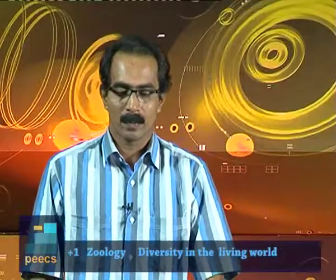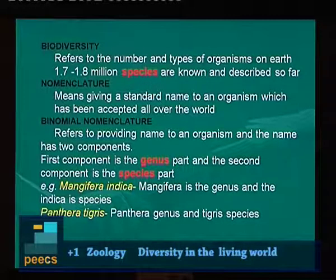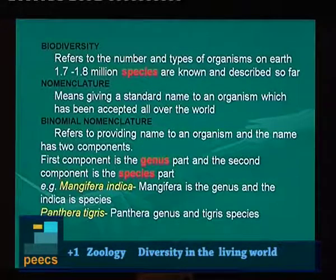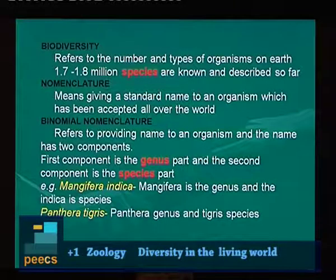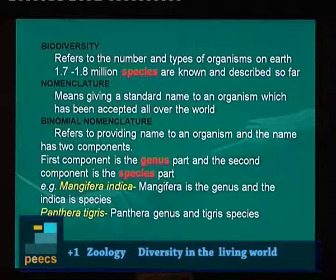Let us see the diversity of organisms — that is biodiversity. Biodiversity refers to the number and types of organisms on earth. As we know, varieties of organisms are there. 1.7 to 1.8 million species are known and described so far.